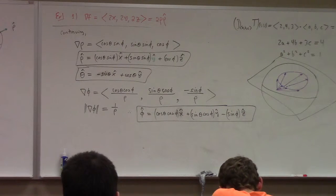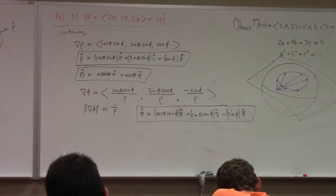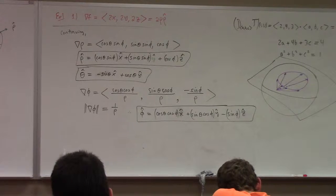You can build any vector at a given point in terms of a linear combination of rho hat, theta hat, phi hat. They're just like x, y, z hat.